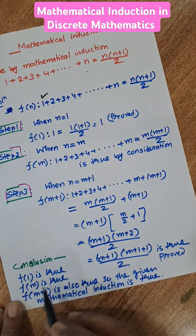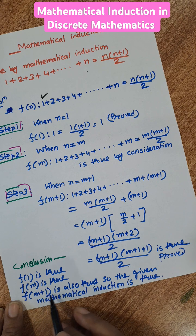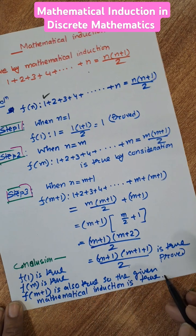Now f of 1 is true, f of m is true, f of m plus 1 is also true, so the above method of mathematical induction is true.